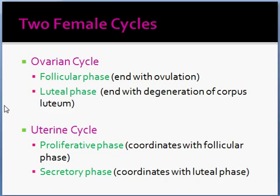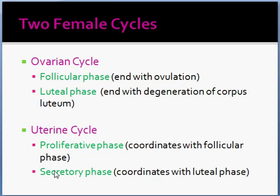You have the ovarian cycle, which has two phases: the follicular phase and the luteal phase. The follicular phase is when the follicle is being produced; the luteal phase is after it is produced. The proliferative phase works hand in hand when the follicle is being produced — the lining for implantation is being created. The secretory phase is after that, working hand in hand with the luteal phase after ovulation, when the menstrual lining is being degraded toward the end of the cycle.